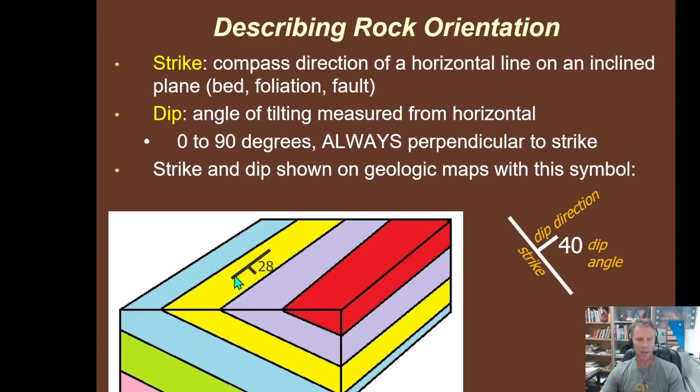So this would be a strike and dip symbol showing that the rocks are striking in this direction, probably north-south if that's the way this box is oriented. And in this case, they're dipping to the right or to the east at 28 degrees. 28 degrees is this angle right here. It's the angle between the horizontal surface and this tilted plane of rock. So we have a 28-degree angle right here. And in fact, if we put strike and dip symbols on all these units, they would all look the same.